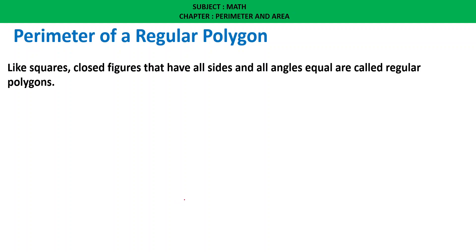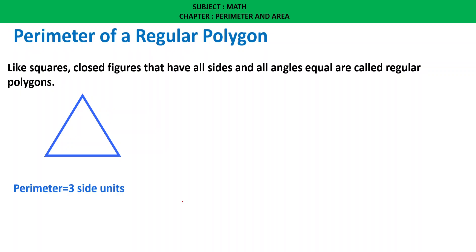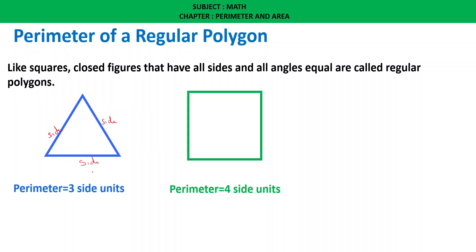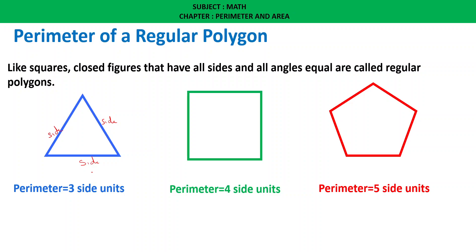Let us see the perimeter of a regular polygon. Closed figures that have all sides equal and all angles equal are called regular polygons — like squares. For an equilateral triangle, perimeter equals 3 side units. For a square, perimeter equals 4 side units. For a pentagon, perimeter equals 5 side units.